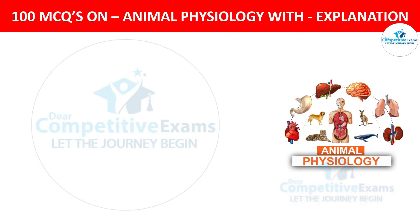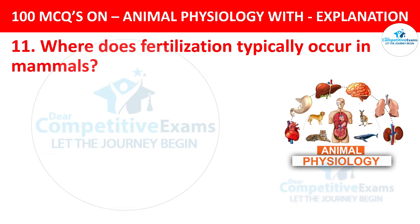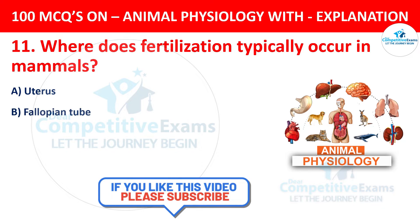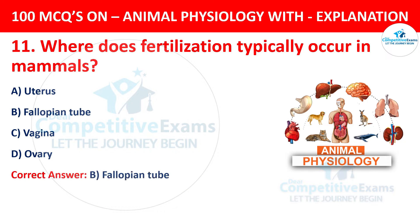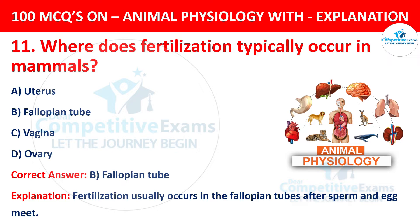Question number 11. Where does fertilization typically occur in mammals? The options are uterus, fallopian tube, vagina, or ovary. The correct answer is B, fallopian tube. Fertilization usually occurs in the fallopian tube after sperm and egg meet.